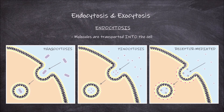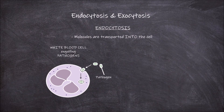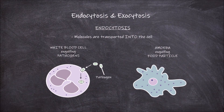An example of endocytosis is seen in white blood cells. They utilise the process of endocytosis to engulf pathogens to destroy them. Another example is seen in the single-celled organism the amoeba. These single-celled organisms utilise the process of endocytosis to engulf food particles to get their nutrition.